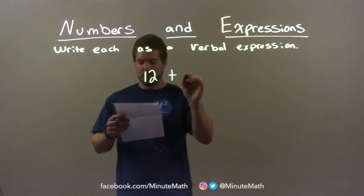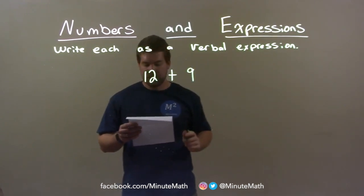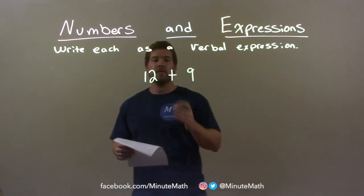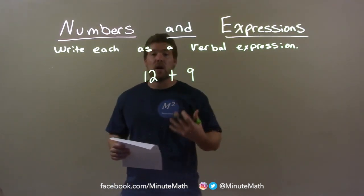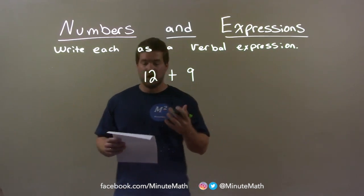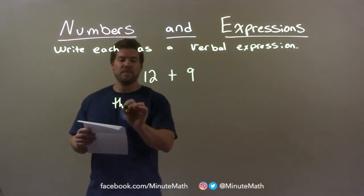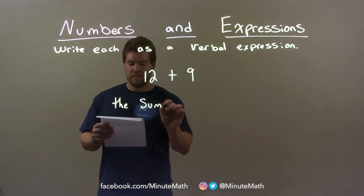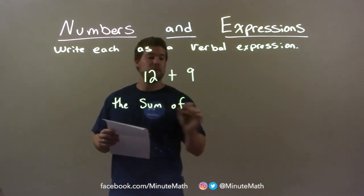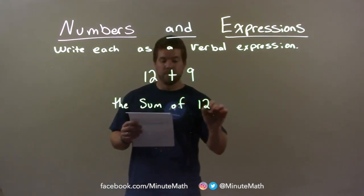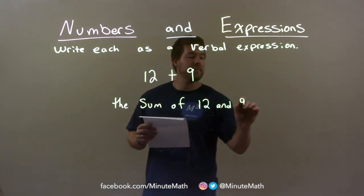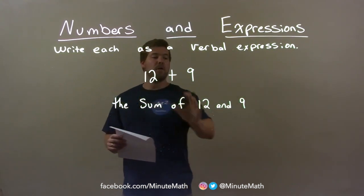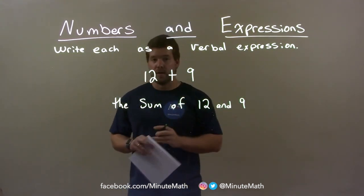12 plus 9. Well, a way we can write this plus sign — we think of sum. A sum. So we have the sum of — and the two numbers are 12 and 9. So we have the sum of 12 and 9, which is 12 plus 9.